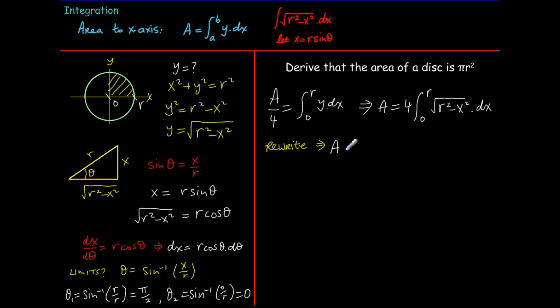So A is equal to four times the integral, instead of r and zero we have pi over 2 and zero, instead of the square root of r squared minus x squared we see that that's the same as r cos theta, and also dx is equal to r cos theta d theta. So we have r cos theta squared here, so we have r squared cos squared theta d theta. The r squared part is a constant so I can move that outside the integral, so I have four r squared pi over 2 and zero of cos squared theta d theta.